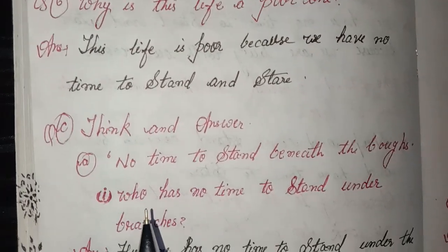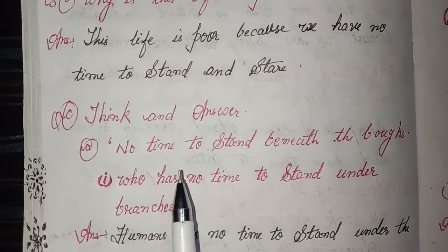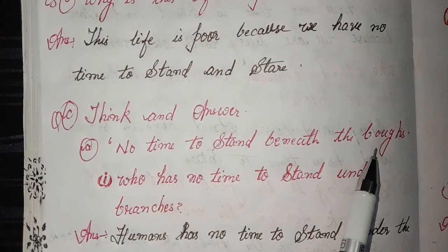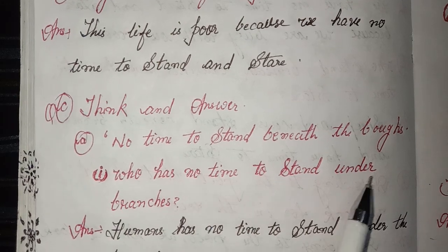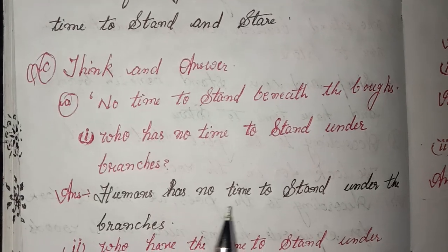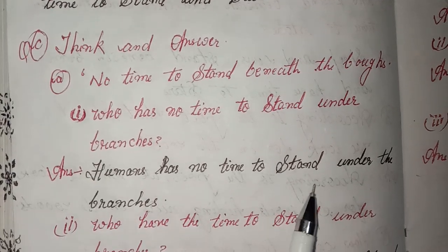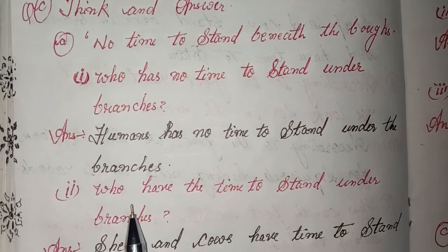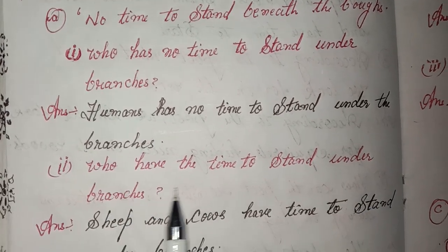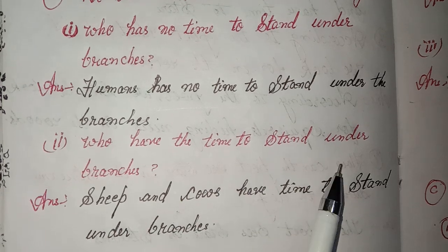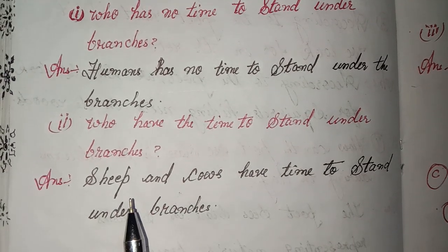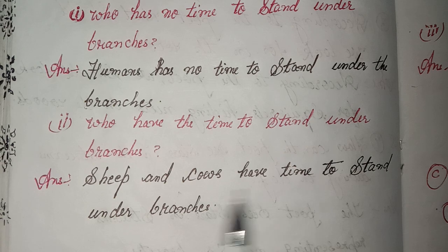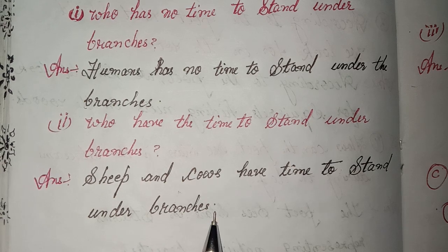See, think and answer. Section A: no time to stand beneath the boughs. First: who has no time to stand under branches? Answer: humans have no time to stand under the branches. Second: who have the time to stand under branches? Answer: sheep and cows have time to stand under branches.